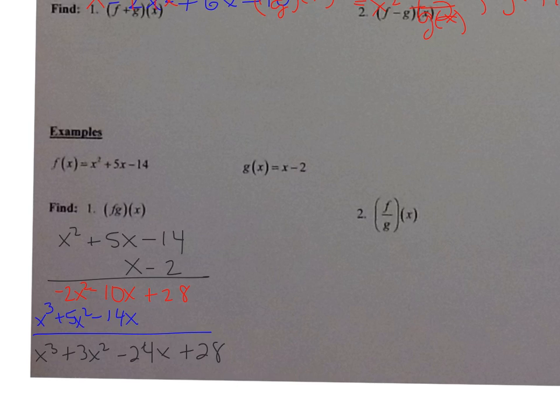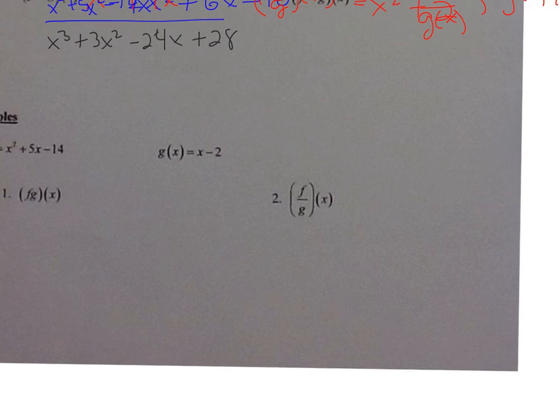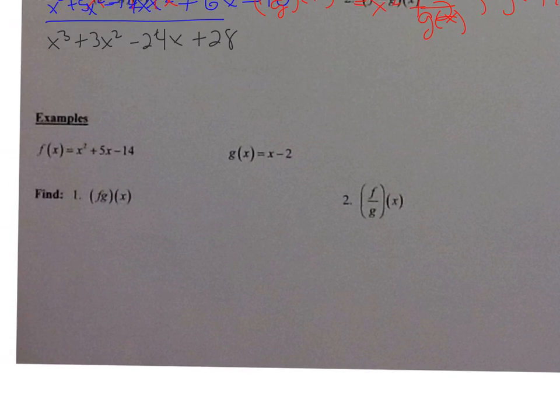All right, let's take a look at number 2. So it's division. So it's f of x divided by g of x. So f of x is x squared plus 5x minus 14 over x minus 2. All right, so what we're going to do is we're going to factor so that we can see if we can reduce anything.